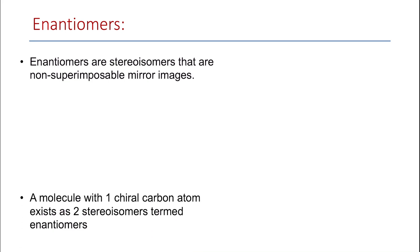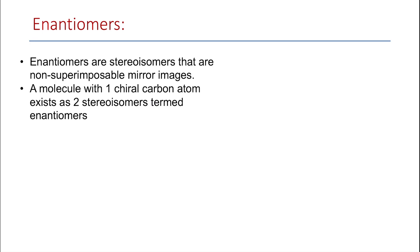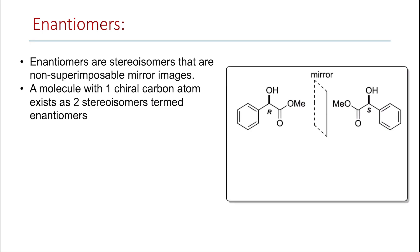Enantiomers are stereoisomers that are non-superimposable mirror images. Normally when a molecule has one chiral carbon atom, they have two stereoisomers. These are termed enantiomers.